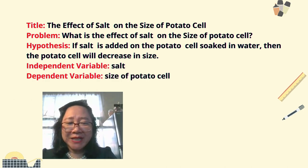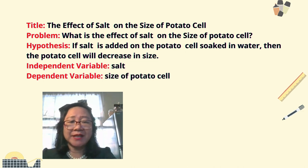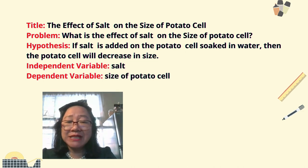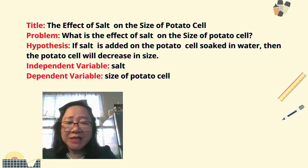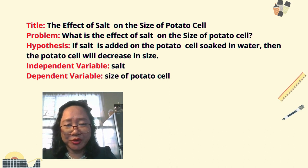Our independent variable is salt, because salt is the one that is being manipulated. And our dependent variable is the size of the potato cell, because the dependent variable is the one that we are going to measure.